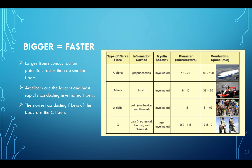The bigger the diameter, the faster the transmission. The thicker the myelin sheath, the faster the messages travel. Larger fibers conduct action potentials faster than smaller fibers. A-alpha fibers are the largest and most rapidly conducting at 80 to 120 meters per second and are responsible for proprioception. The slowest fibers are the C-fibers — mechanical, thermal, and chemical pain fibers that are non-myelinated, conducting at 0.5 to 2 meters per second. Just know A-alpha is super fast for proprioception, and C is slow.